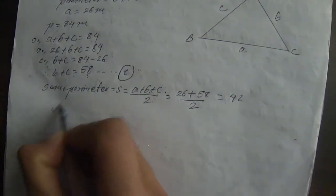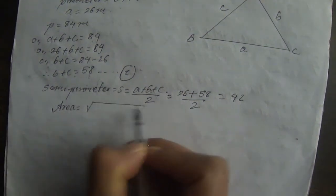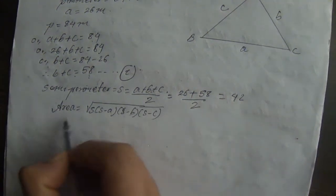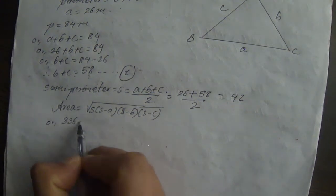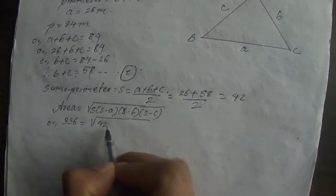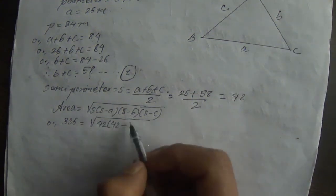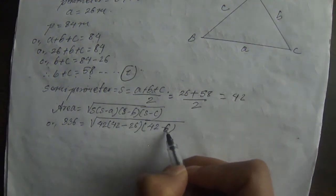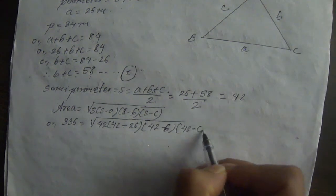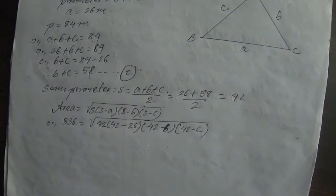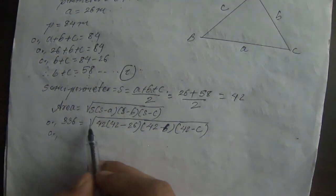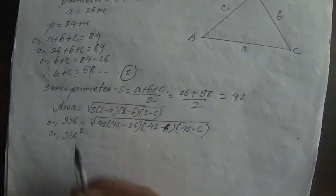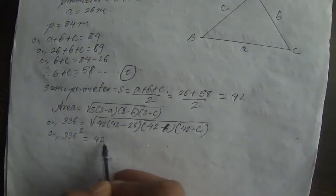We know the formula: Area equals the square root of S times (S minus A) times (S minus B) times (S minus C). Our area value is 336. Substituting S equals 42: root of 42 times (42 minus 26) times (42 minus B) times (42 minus C).